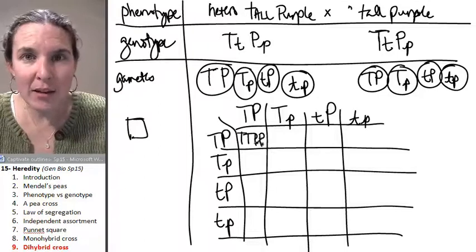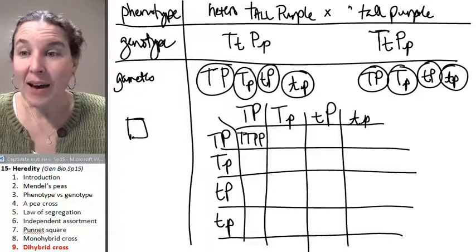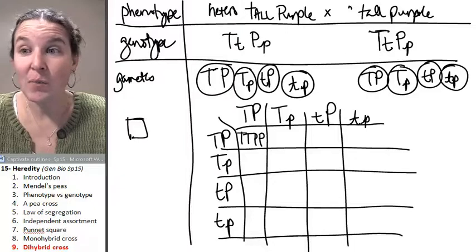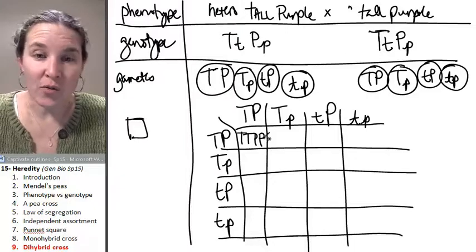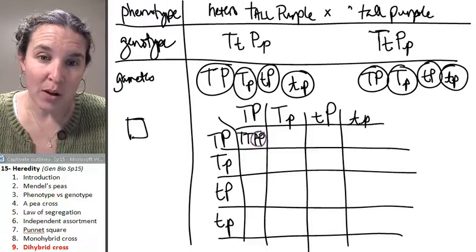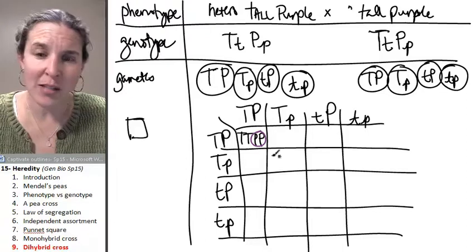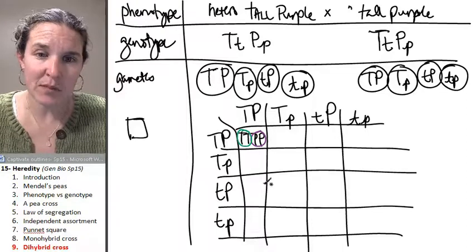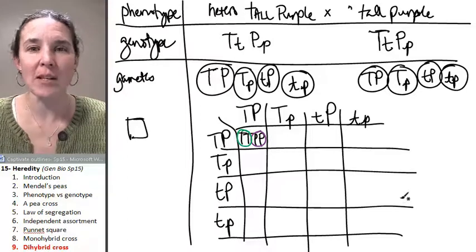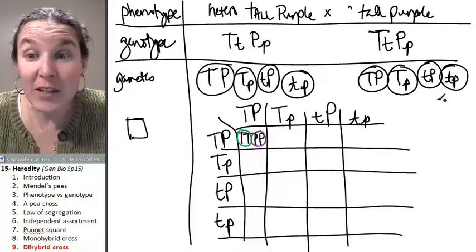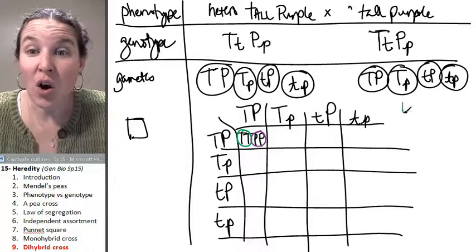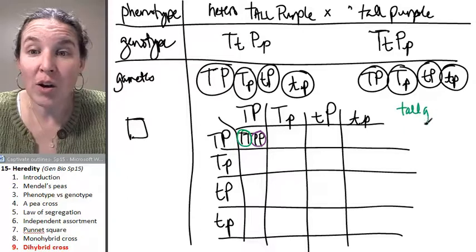And then what does this guy look like? That guy is tall and purple. And I don't know how to write it. It's purple and I guess we'll make tall green just so you can visualize the phenotypes. So one of our possible phenotypes is going to be tall green.